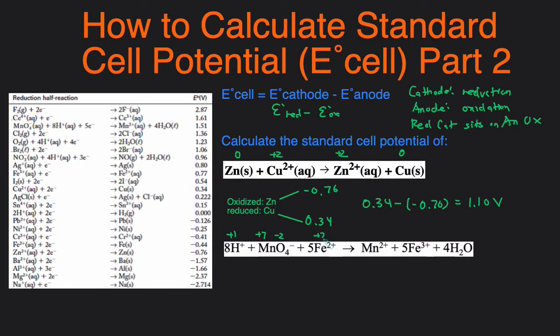Fe would just be positive 2 because of the charge. Mn would be positive 2, Fe would be positive 3, and then H would be positive 1. And O is negative 2 because those are the rules for H and O. Then let's determine what's oxidized and reduced. The oxidized element is the one that has an increase in oxidation number. And that would be the iron because it went from positive 2 to positive 3. And then the reduced element would be the Mn because it went from positive 7 to positive 2.